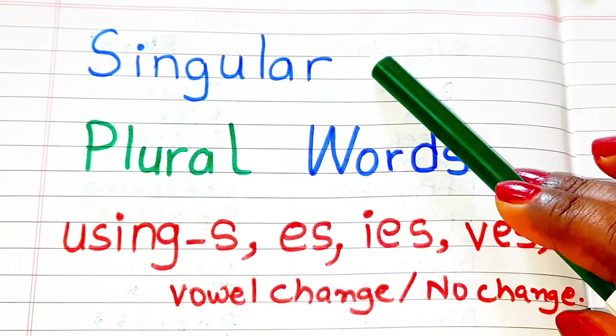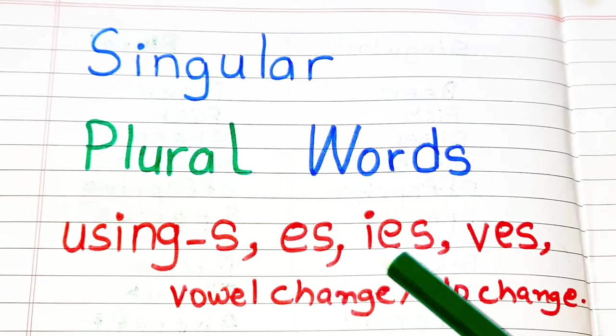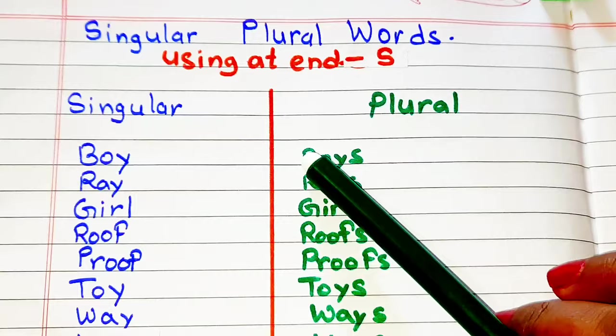Hello everyone, welcome to my channel Simple Easy Learning. Today's video topic is singular plural words, in which we will change singular words to plural by using s, es, ies, ves, vowel change, or no change. At first we will see what are the singular words which are changed into plural by using s.